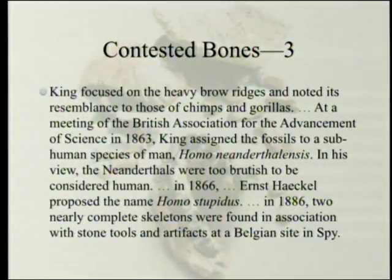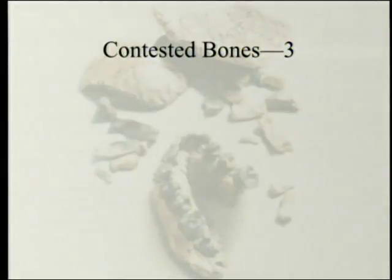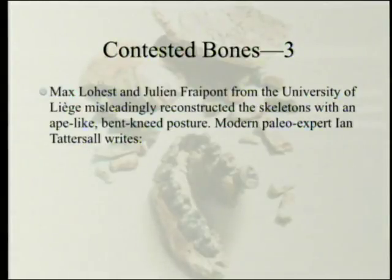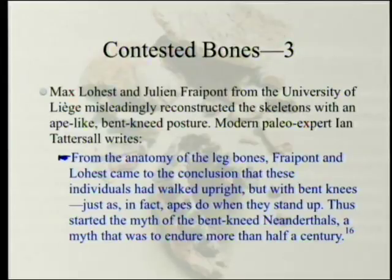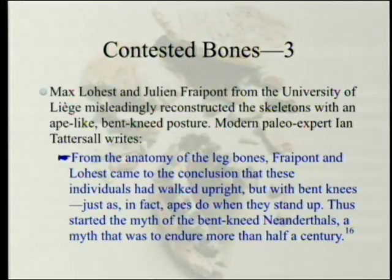In 1886, two nearly complete skeletons were found in association with stone tools and artifacts at a Belgian site in Spy. Max Lohest and Julien Fraipont from the University of Liège misleadingly reconstructed the skeletons with an ape-like bent-knee posture. Modern paleo expert Ian Tattersall writes: 'From the anatomy of the leg bones, Fraipont and Lohest came to the conclusion that these individuals had walked upright but with bent knees — just as apes do when they stand up. Thus started the myth of the bent-kneed Neanderthals, a myth that was to endure more than half a century.'